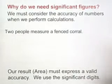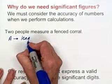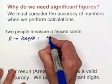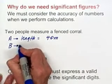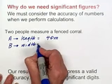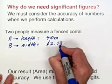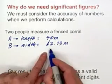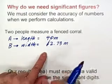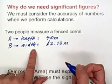let's say we have two people who are measuring a fenced corral. Now, let's say person A measures the length, and they measure it as 40 meters. Let's say person B measures the width, and they measure it as 12.73 meters.